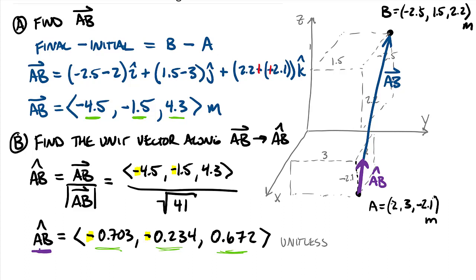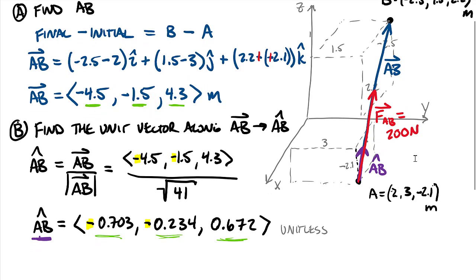Next we add a force vector along this same line AB. The force FAB has a total magnitude of 200 newtons. We take the unit vector — which is pure direction — and multiply it by the magnitude of 200 newtons. This scales the direction onto the magnitude to create a force vector whose component magnitudes sum (via Pythagorean theorem) to 200 newtons.